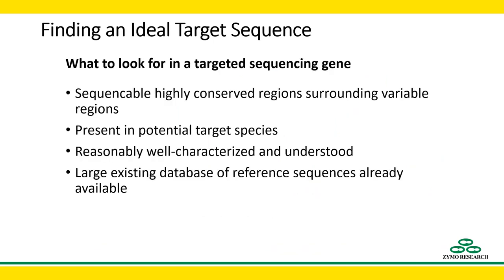An ideal gene for targeted sequencing should, first and foremost, be easily sequenceable, with no extreme GC content regions or secondary structures that make amplification and sequencing difficult. It should be present in our group of interest and even potentially beyond. It should be reasonably well characterized and understood in terms of how quickly it changes over evolutionary history, and it should have a large existing database of reference sequences available so that we don't have to build one ourselves.